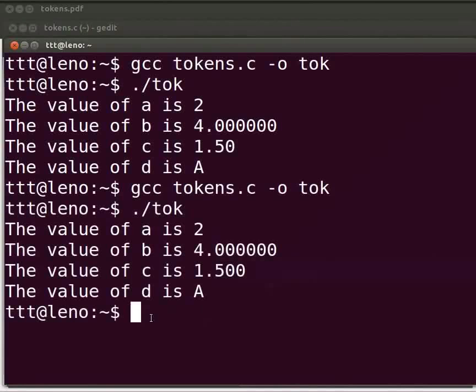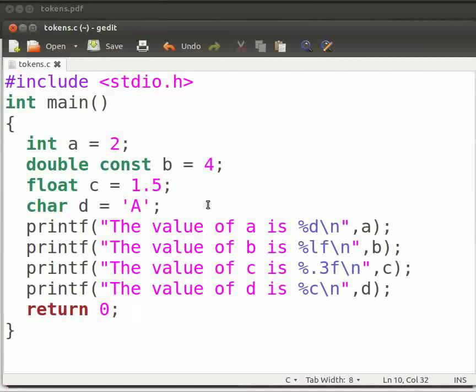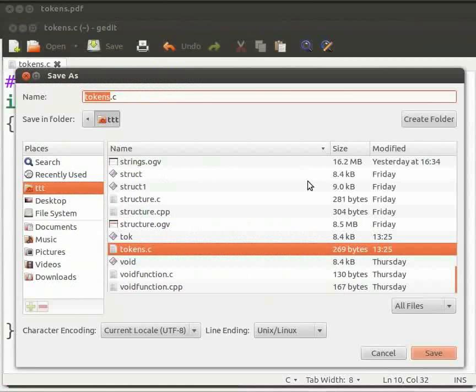Now, we will execute the same program in C++. Come back to our program. I will change a few things here. First, press Shift, Ctrl, and S key simultaneously on your keyboard. Now, save the file with an extension .cpp and click on save.